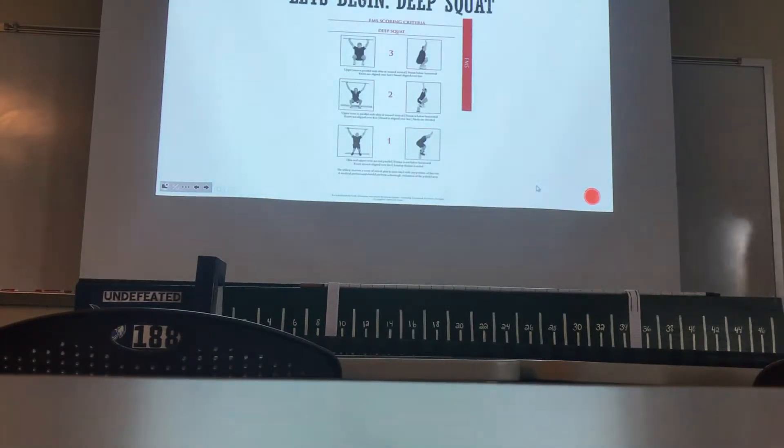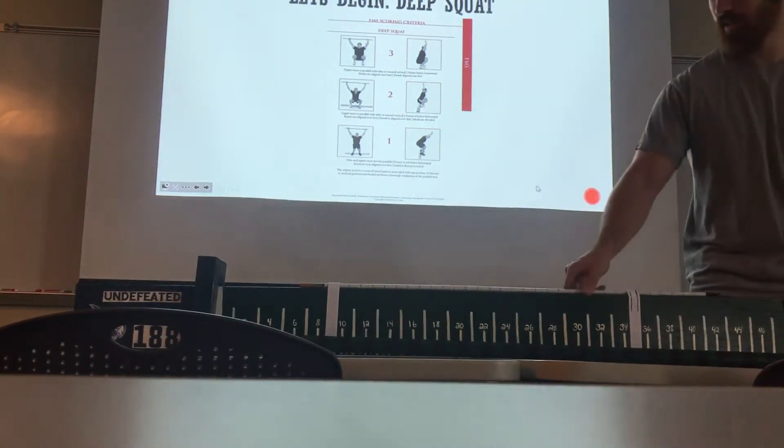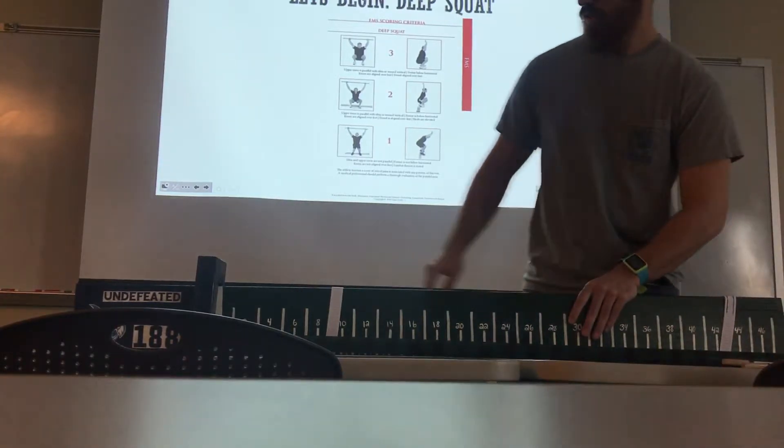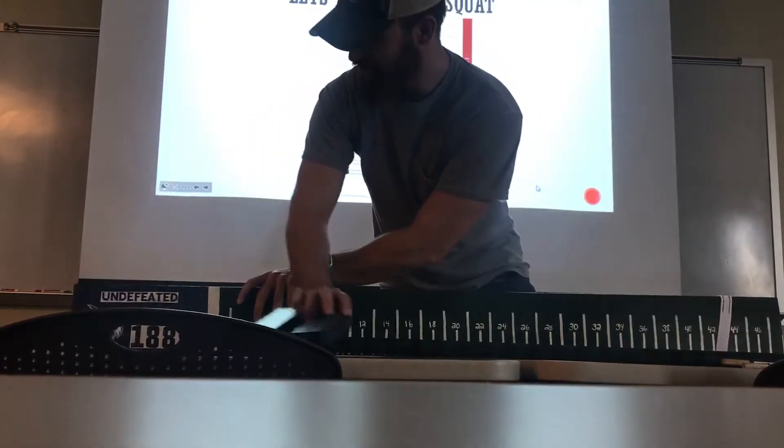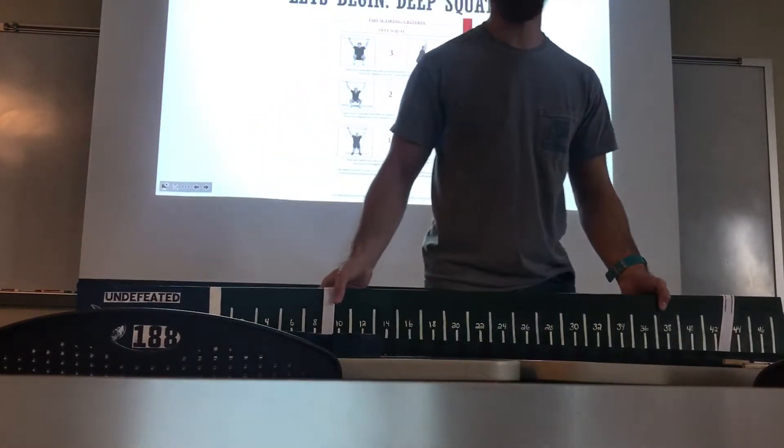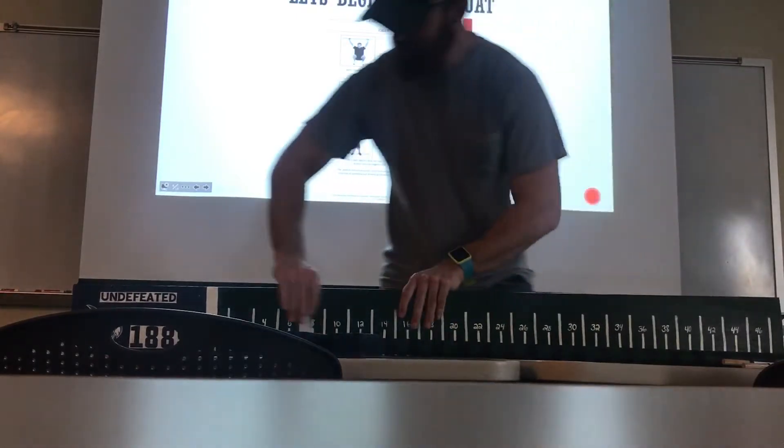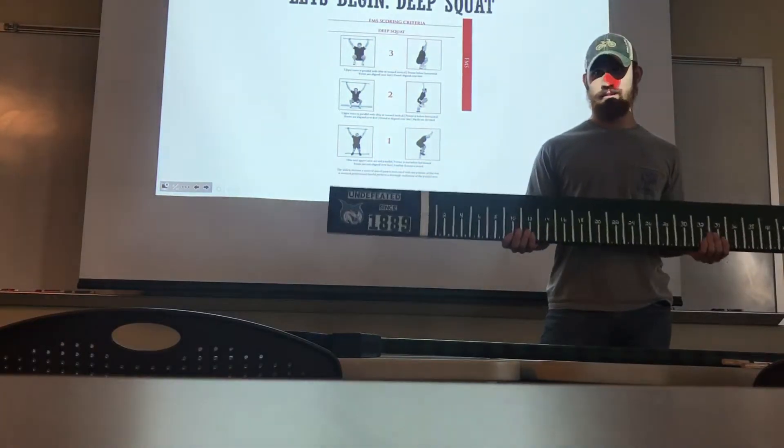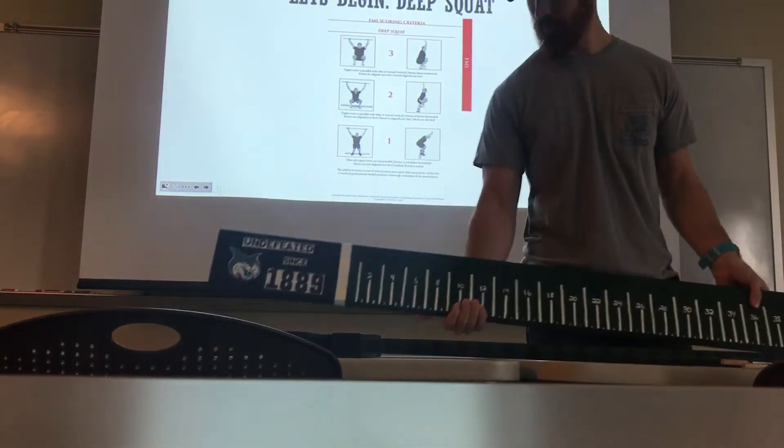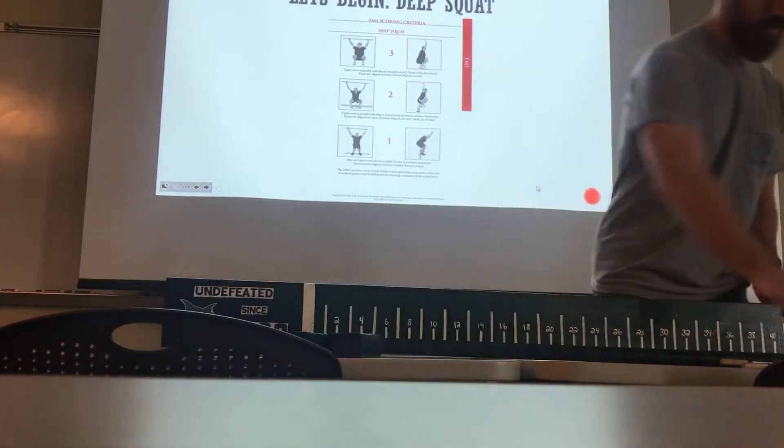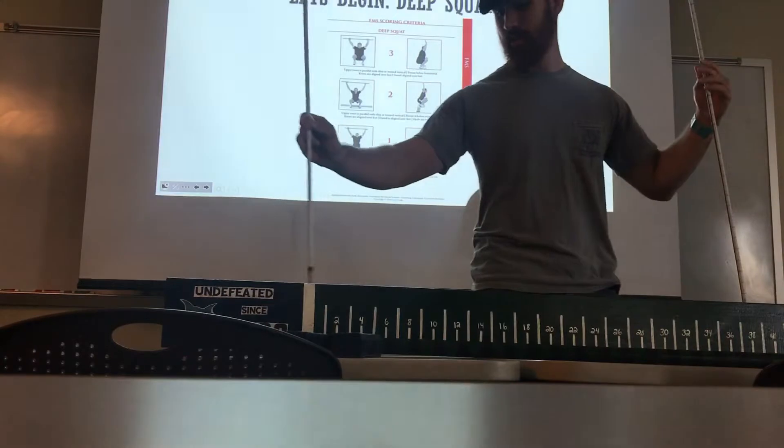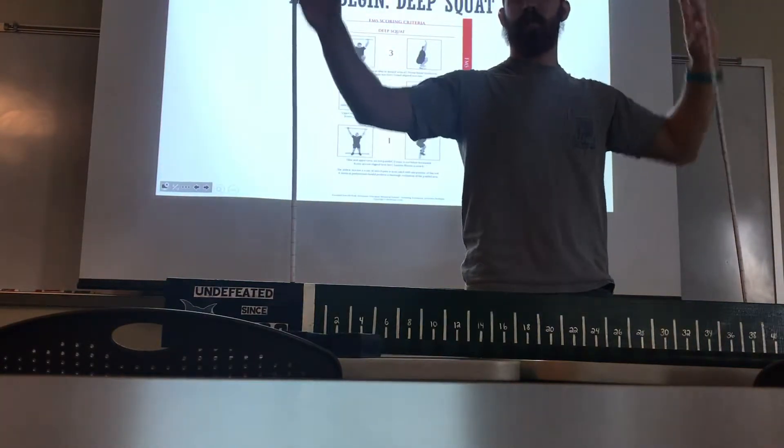All right, let's begin. Deep squat. So a three on the deep squat. Let's go ahead and break this board out to show you guys. This right here is the FMS board, it's my own homemade build FMS board. This is your board. You get two holes on top. You're gonna get these little dowels and you're gonna band them in between for your hurdle steps.